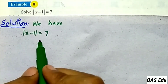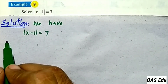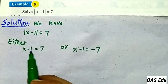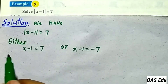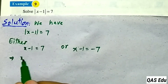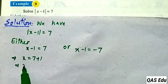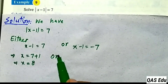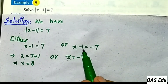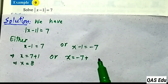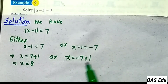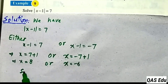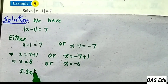Example 9. These are related equations. Absolute value of x minus 1 is equal to 7. Two possibilities: plus 7 or minus 7. Move minus 1 to the right as plus 1: 7 plus 1 gives 8. For the other: minus 7 plus 1 gives minus 6. Solution set: plus 8 and minus 6.